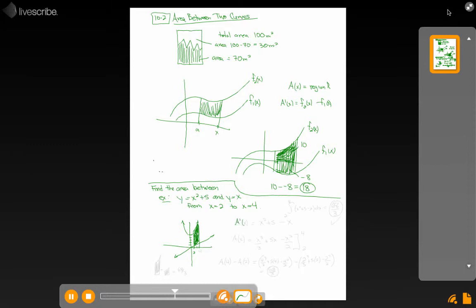my a prime function is equal to x squared plus 5 minus x. So my area function, then, is the anti-derivative of that, which is x cubed over 3 plus 5x minus x squared over 2 plus c. But since I'm evaluating it from 2 to 4, I can just say, well, let's just do that from 2 to 4.